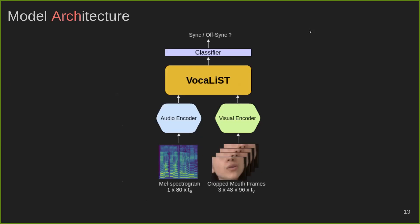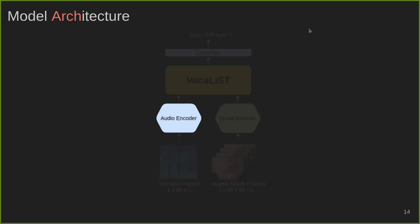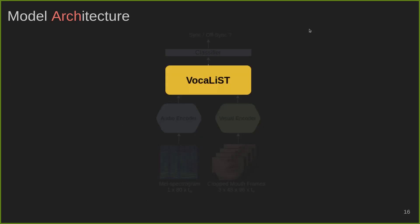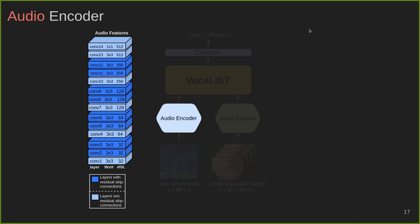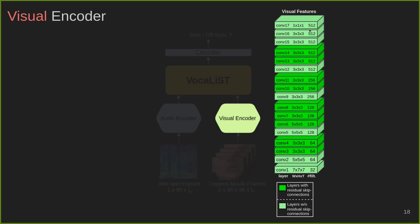Here is the architecture of our model for lip sync detection. It mainly contains an audio encoder, a visual encoder, and a module for detecting synchronization. The audio encoder is a stack of 2D convolutional layers with residual skip connections that operates on the MEL spectrogram input. The visual encoder is a stack of 3D convolutional layers with residual skip connections that works with RGB frame sequences cropped around the mouth.